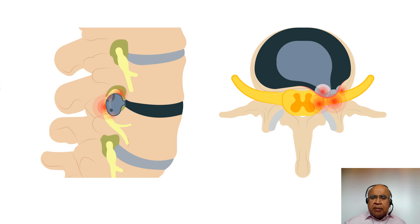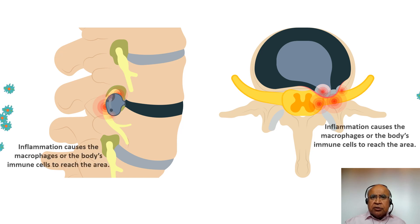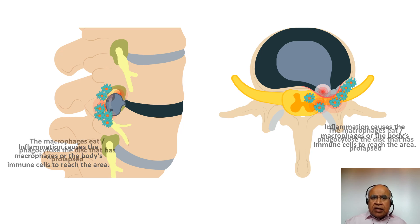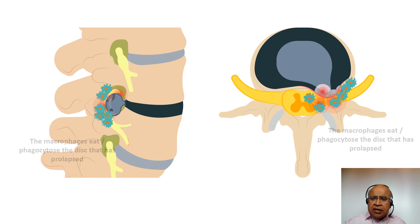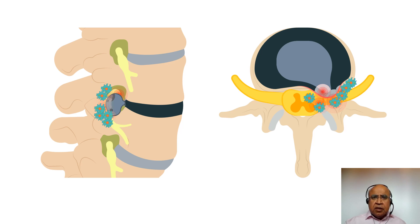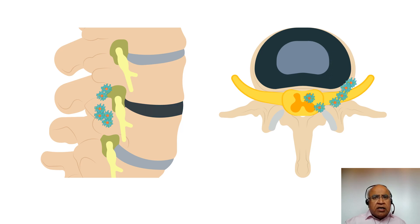The body has a mechanism to handle disc prolapse. As soon as the prolapse takes place, there is inflammation around the nerve and the prolapsed disc. The inflammation attracts macrophages to the area. Macrophages are the body's immune cells whose normal function is to kill and digest bacteria and viruses. Surprisingly, the same macrophages eat and digest the disc material that has prolapsed outside the disc space. With time, the prolapse decreases in size and there is no more pressure on the nerves. Once the inflammation settles, the macrophages also move away.